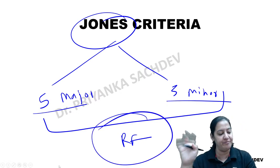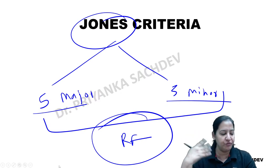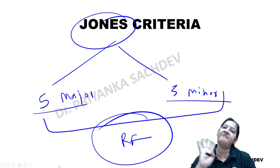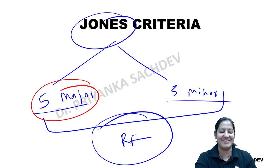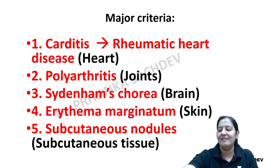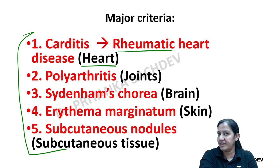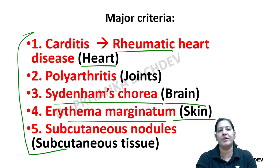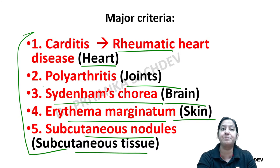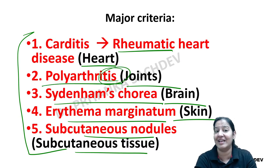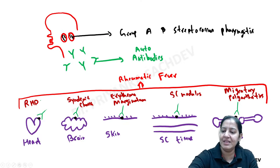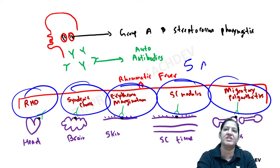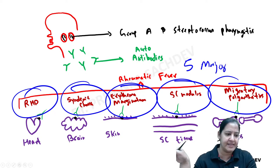The five major Jones criteria correspond to the five diseases and five organs. The mnemonic is JONES: J for Joints (migratory polyarthritis), O for heart (carditis — make O into a heart shape), N for Nodules (subcutaneous nodules), E for Erythema marginatum, and S for Sydenham's chorea. These five are the Jones five major criteria.